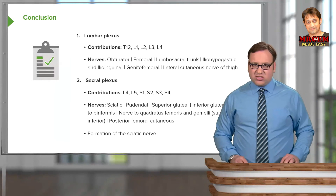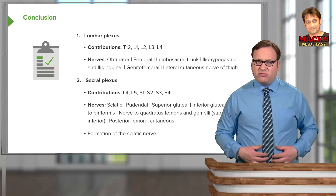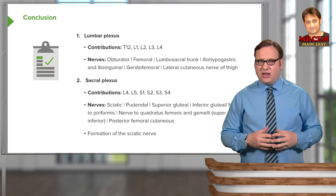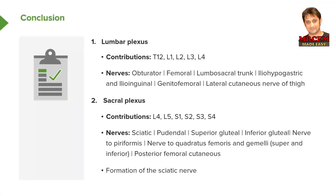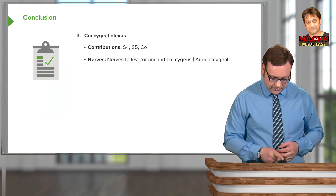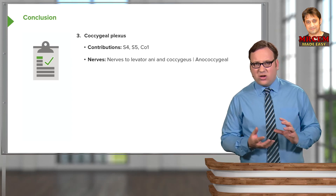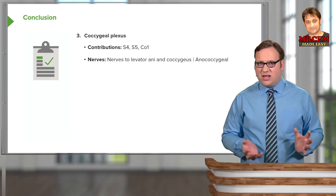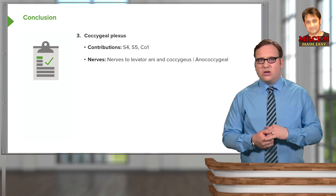In this lecture we've looked at the lumbar plexus and its nerves: the obturator, femoral, lumbosacral trunk, iliohypogastric and ilioinguinal nerves, genitofemoral, and the lateral cutaneous nerve of the thigh. We then looked at the sacral plexus, which gives rise to the sciatic, pudendal, superior and inferior gluteal nerves, nerve to piriformis, quadratus femoris, and nerve to the gemelli, as well as the posterior femoral cutaneous nerve. We also looked specifically at the formation of the sciatic nerve, and finished by looking at the coccygeal plexus and how it gives rise to nerves supplying levator ani, coccygeus, and the anococcygeal nerve.